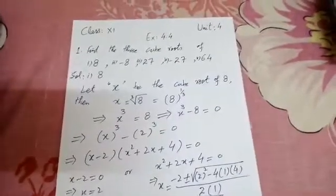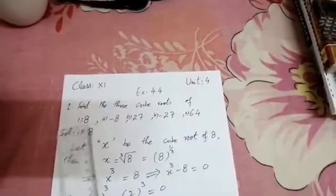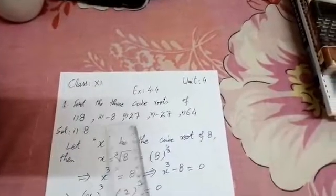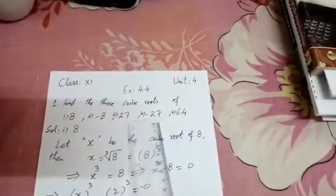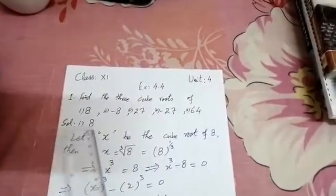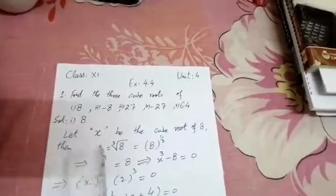Viewers, my name is Hassan. Here is the book of mathematics for FSc Part 1 students. I'll provide you the solution of this book. Today my lesson is regarding Exercise 4.4, Unit number 4. We are starting from Question number 1: find the three cube roots. In this question there are total five parts — Part 1 is 8, Part 2 is minus 8, Part 3 is 27, Part 4 is minus 27, and Part 5 is 64. Let's start Part number 1, that is to find out the three cube roots of number 8.